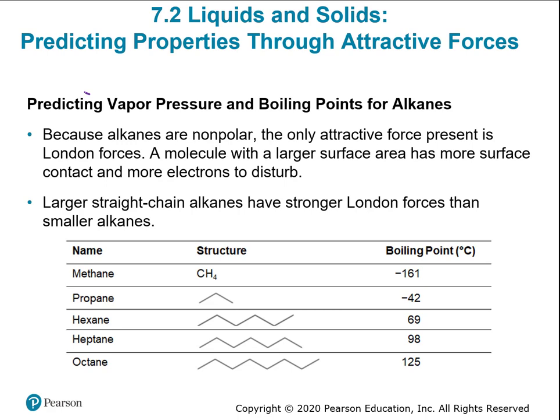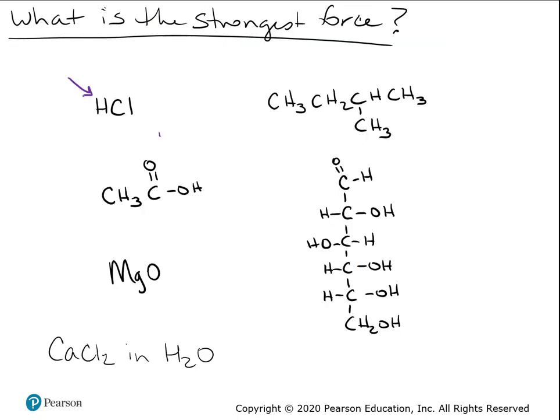Looking at the first one, HCl — what is the strongest intermolecular force? It's not hydrogen bonding, because hydrogen bonding only happens if an oxygen or nitrogen has a hydrogen directly connected. This one has a chlorine, so this is dipole-dipole. It's a polar molecule because the electrons hang out around the chlorine more, making the chlorine side more negative and the other side more positive. The term for that is dipole-dipole attraction.